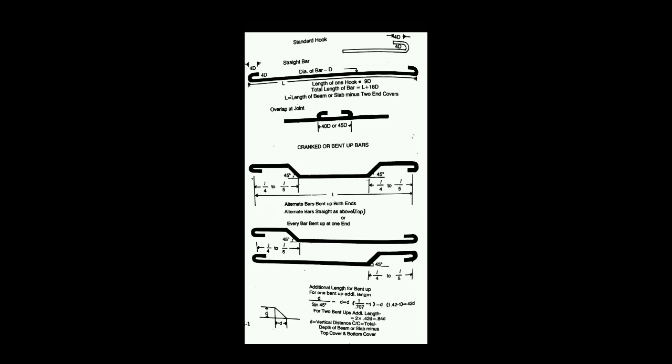How they are bent up in the slabs or other structural elements. The first figure shows the hook length. If the D is the diameter of the bar, first figure, the hook length will be 9D. That is, 4D and distance between the hook portion and main portion is 4D. The length of one hook will be 9 times diameter. You have to add to the straight length 9D for one hook. For two hooks, you have to add 18D, that is, referring to the figure 2.